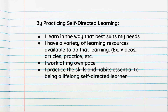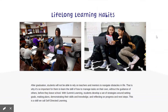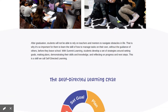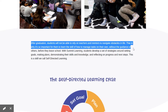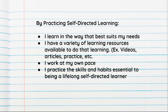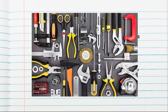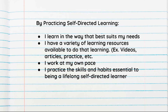Finally, becoming a strong self-directed learner prepares you for the types of learning you'll be doing when you go out to learn as an adult. Summit Learning states on their website that after graduation students will not be able to rely on teachers and mentors to navigate obstacles in life. That is why it's so important for them to learn the skill of how to manage tasks on their own without the guidance of others before they leave school. A lot of adults are entering college today and realizing that they're not ready to learn on their own. College programs put a lot more emphasis on giving you the tools to learn and asking you to do so on your own. If you are a strong self-directed learner by the time you get there, you'll be perfectly great.